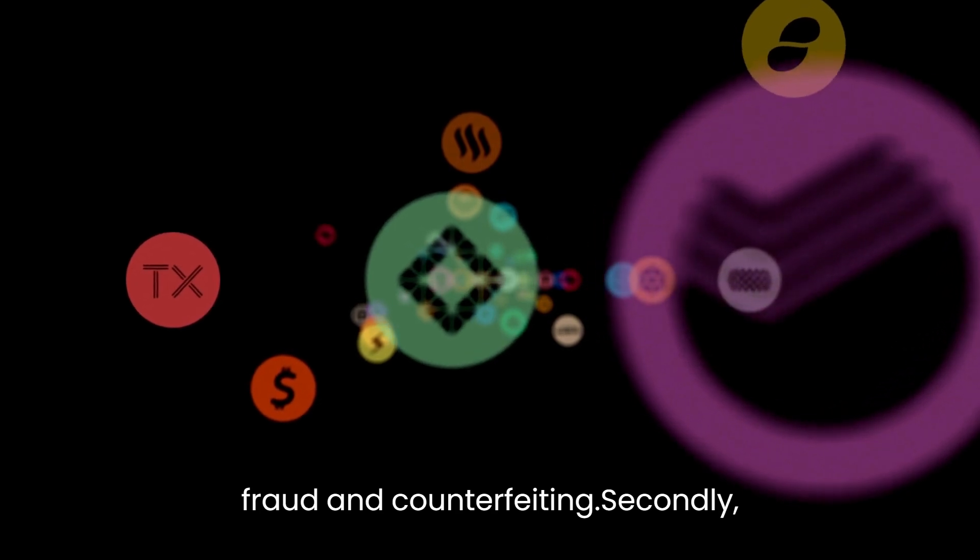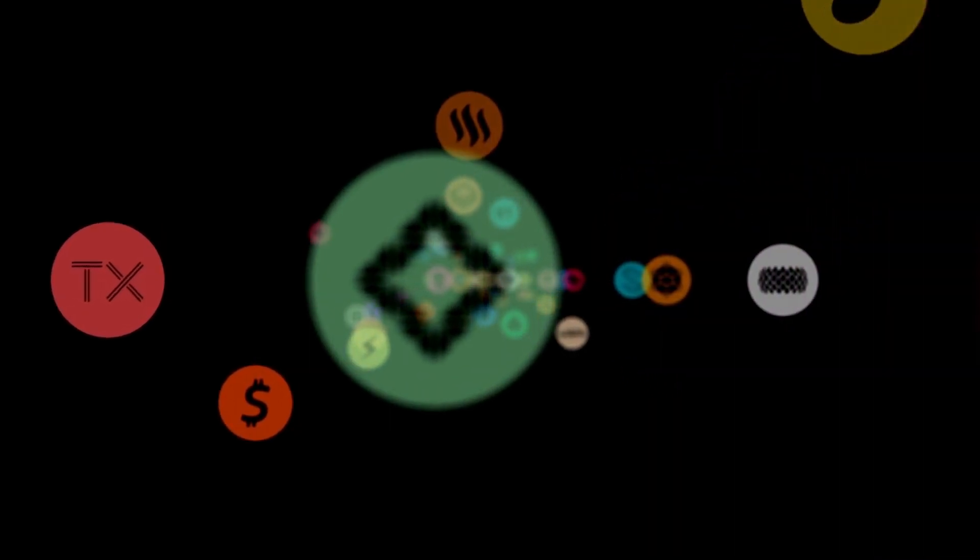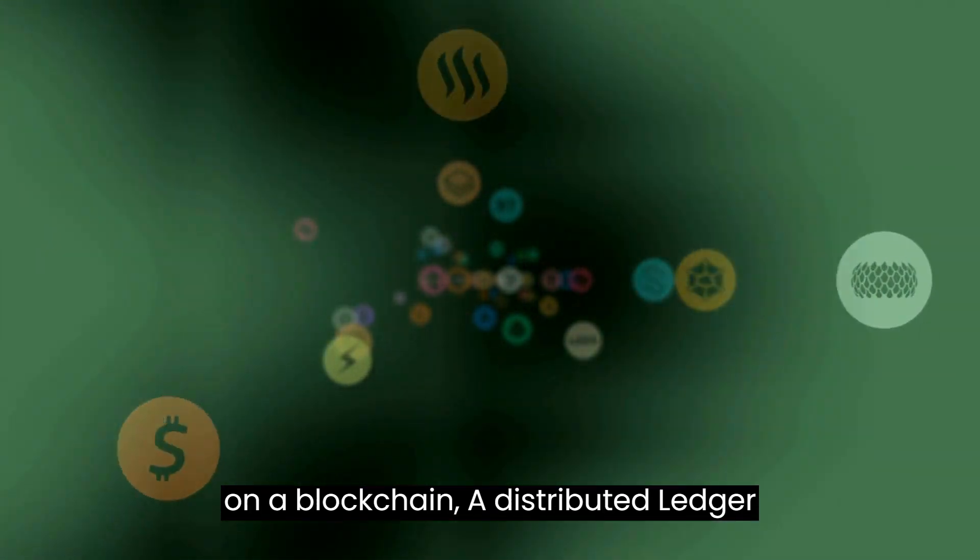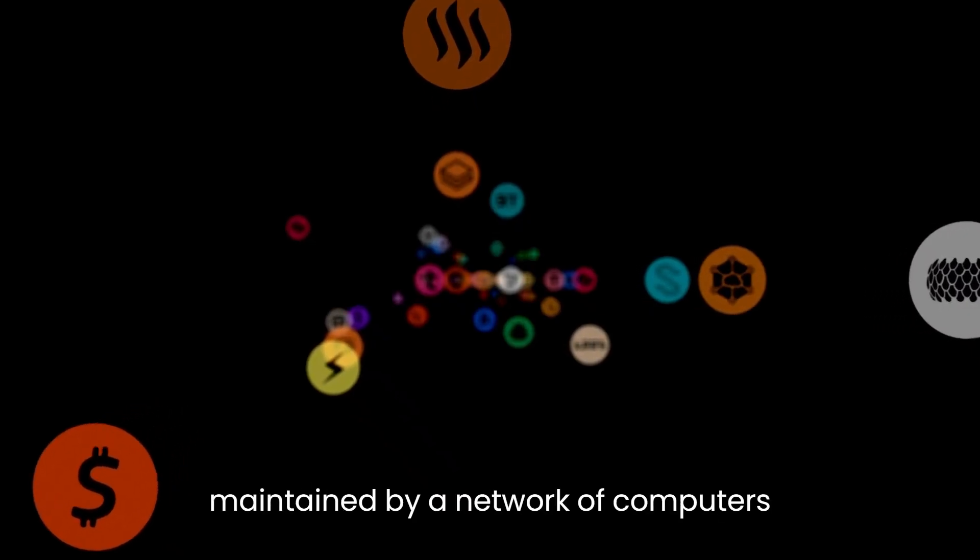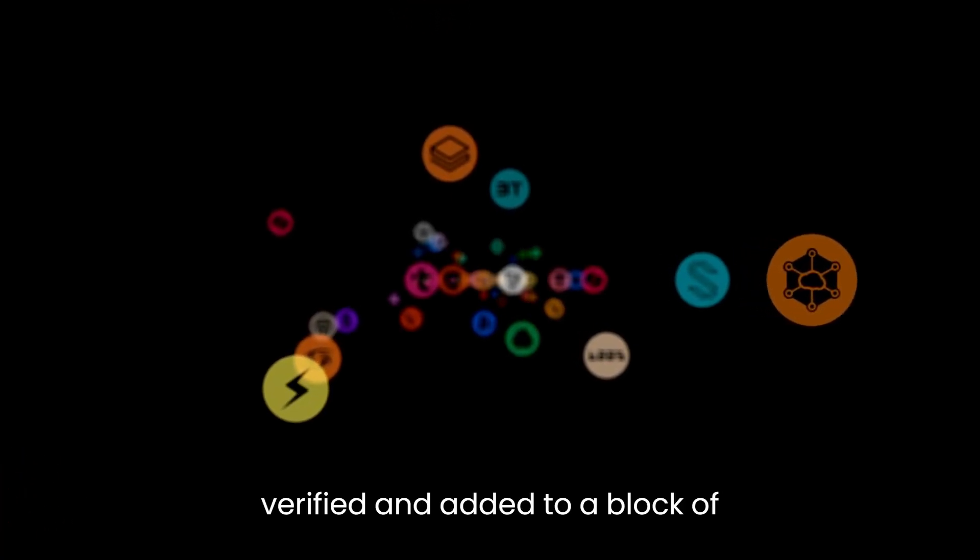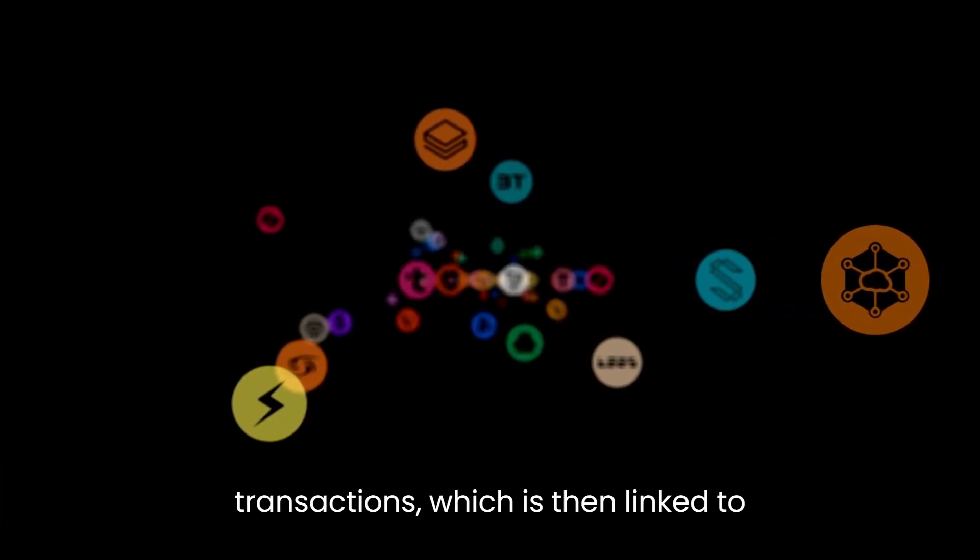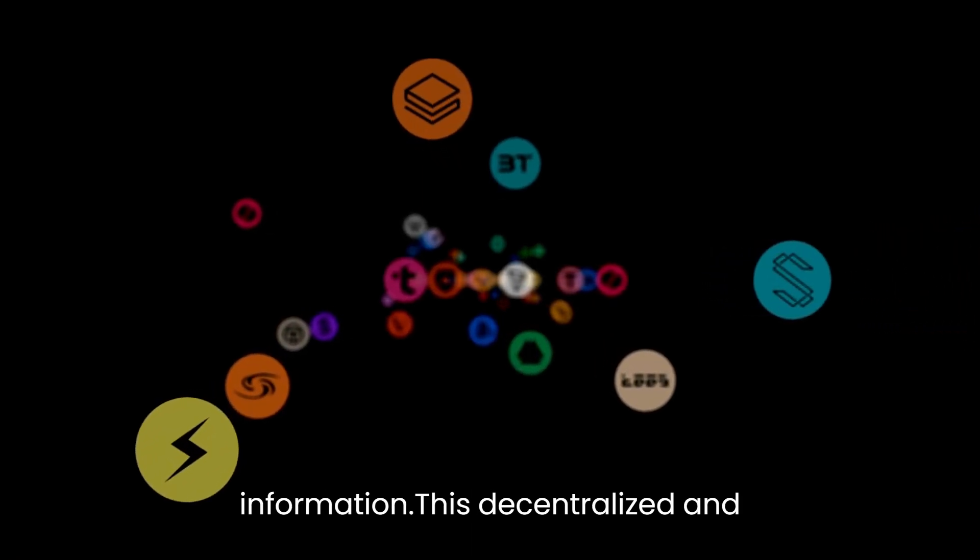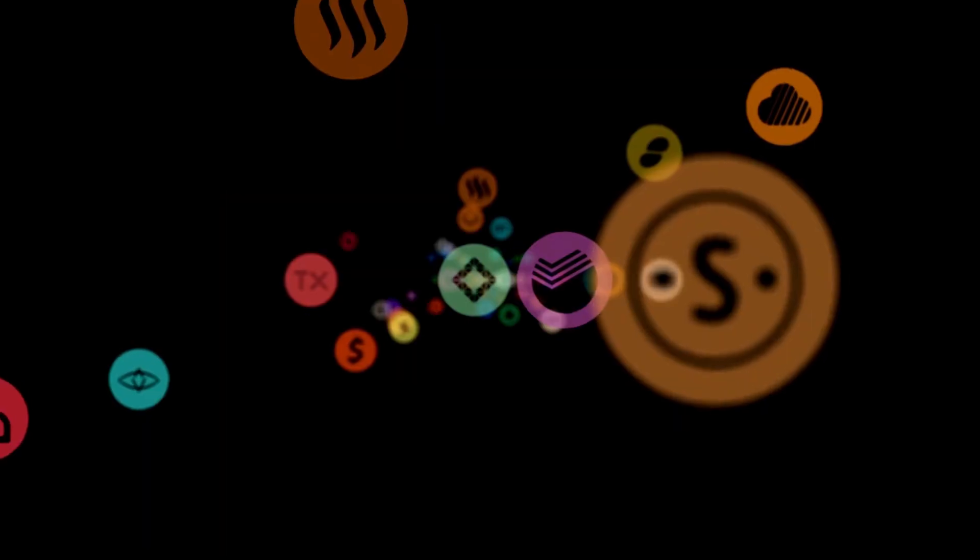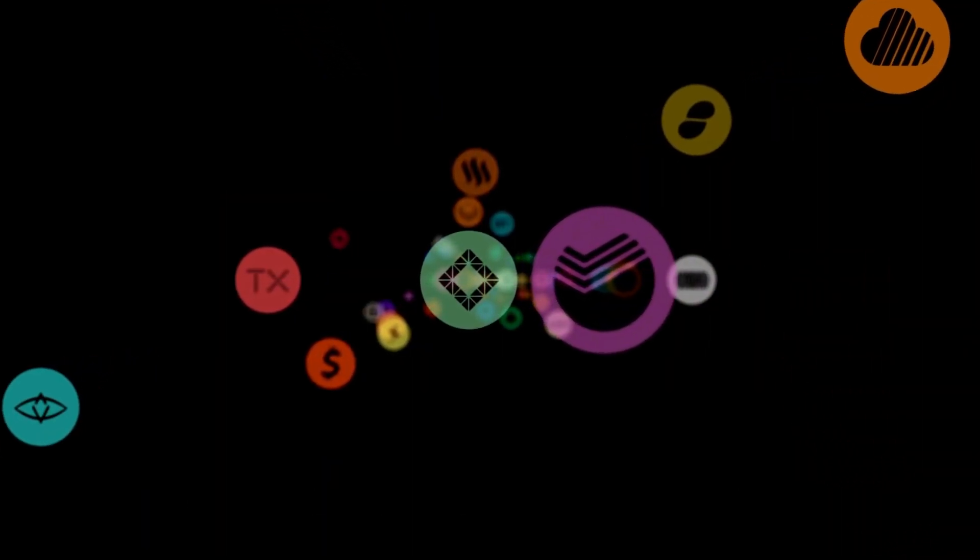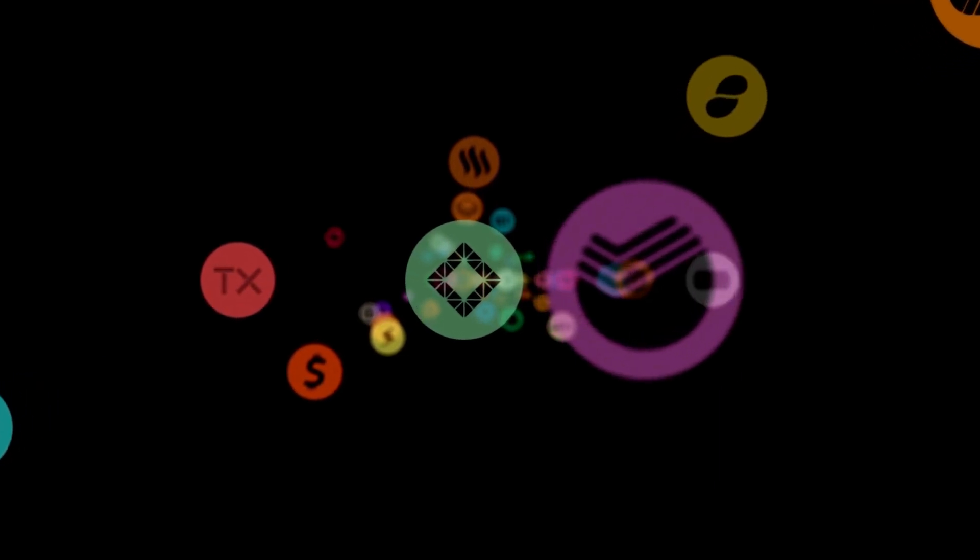Secondly, cryptocurrency transactions are recorded on a blockchain, a distributed ledger maintained by a network of computers known as nodes. Each transaction is verified and added to a block of transactions, which is then linked to the previous blocks, creating a chain of information. This decentralized and transparent nature of the blockchain ensures the accuracy and immutability of transaction history.